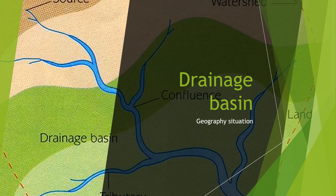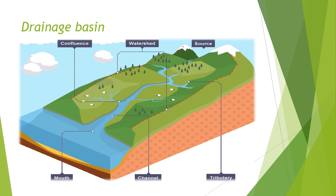Hello guys, so we're in a Jokofi situation and today we're going to be learning about drainage basin. As we know, we've covered rivers before. Here is a diagram about the drainage basin. Drainage basin simply means the area of land drained by a river. Here we have a confluence.